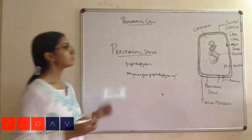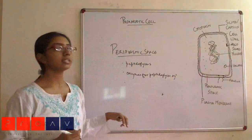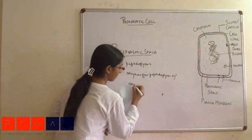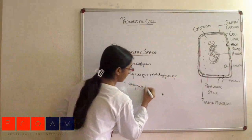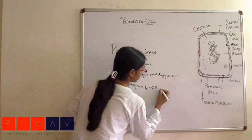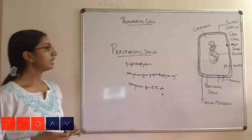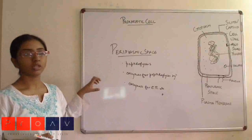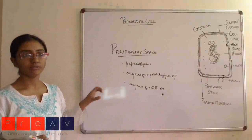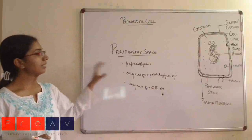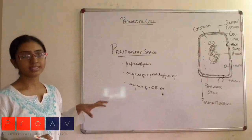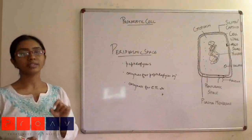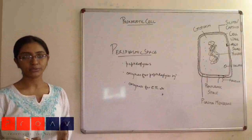It has also been found that the periplasmic space contains certain enzymes for the ATP or respiratory system. In gram-negative bacteria, the periplasmic space is very small because of the presence of the outer wall, so all these enzymes present in the periplasmic space do not exist in gram-negative bacteria. Also, the cell wall is very thin in gram-negative bacteria compared to gram-positive bacteria.